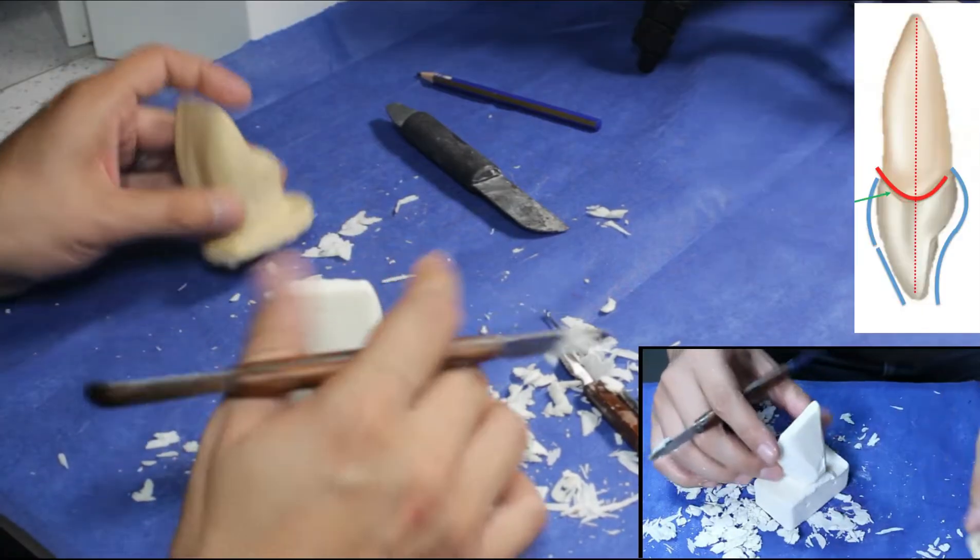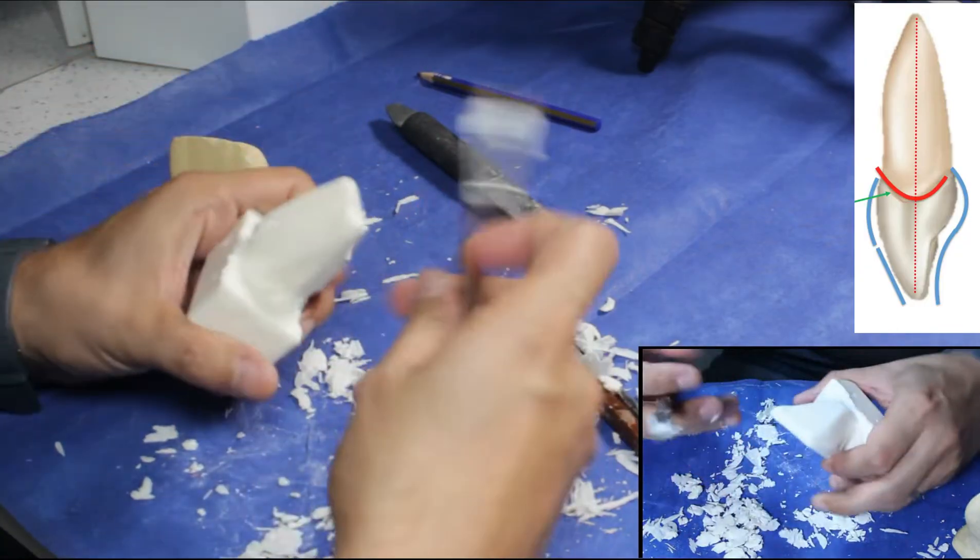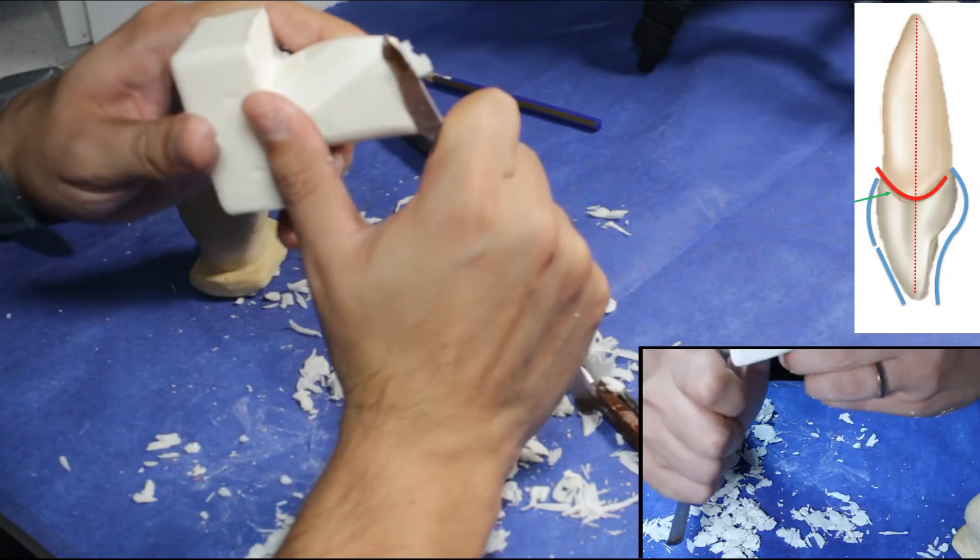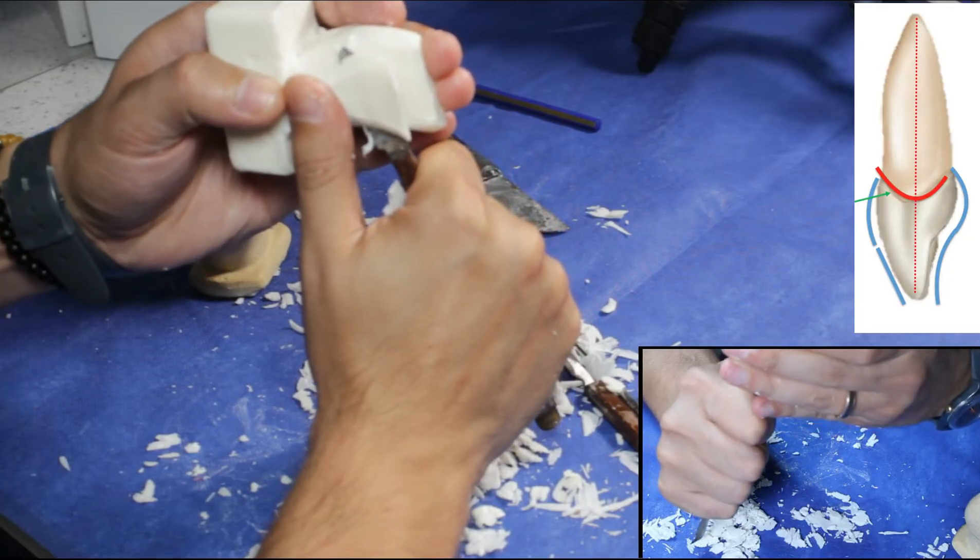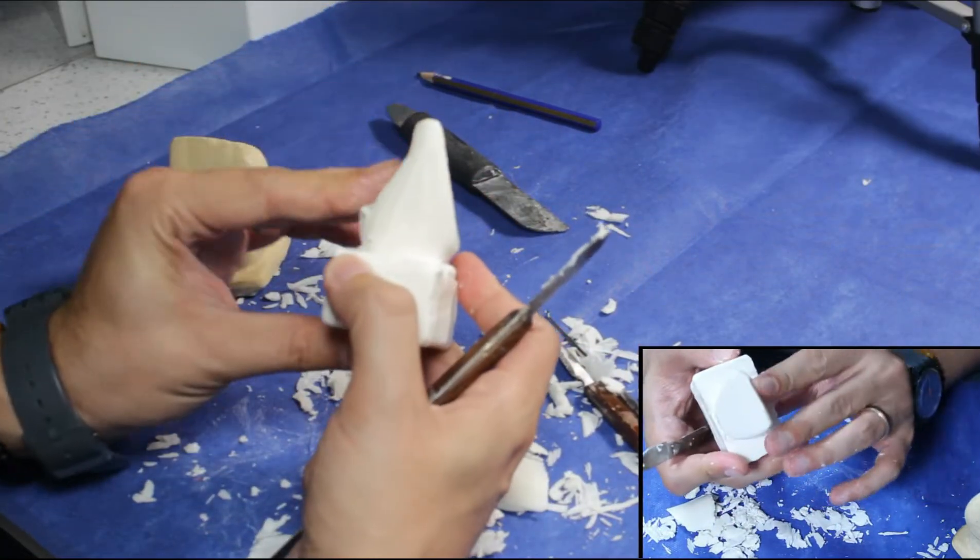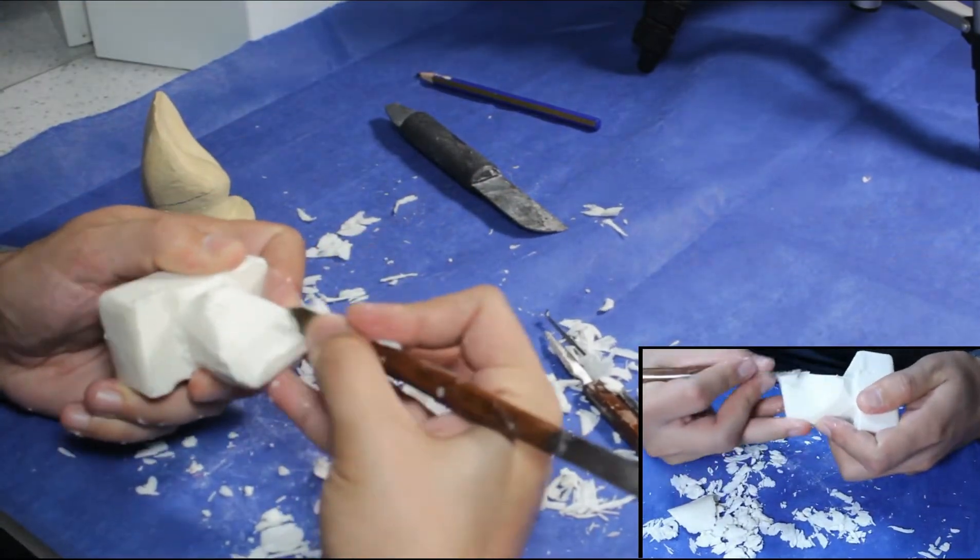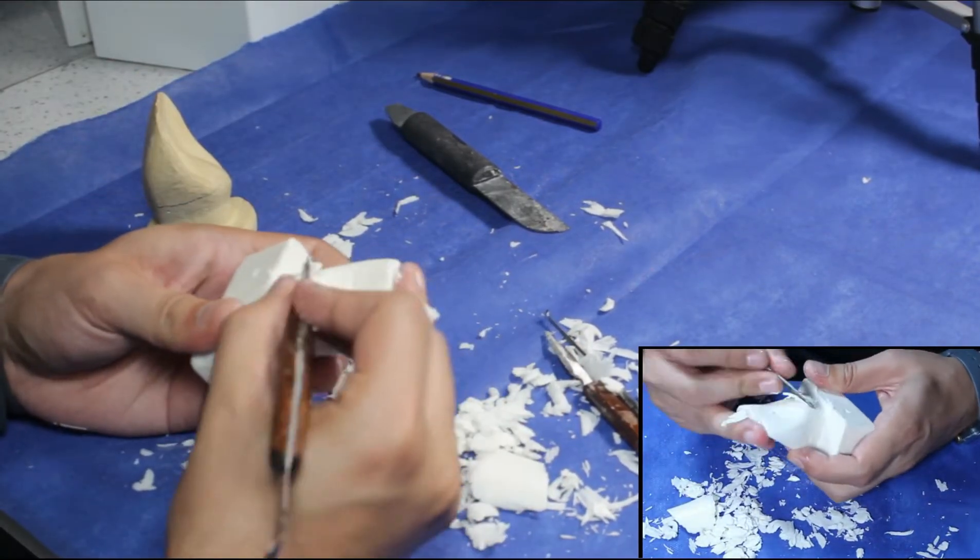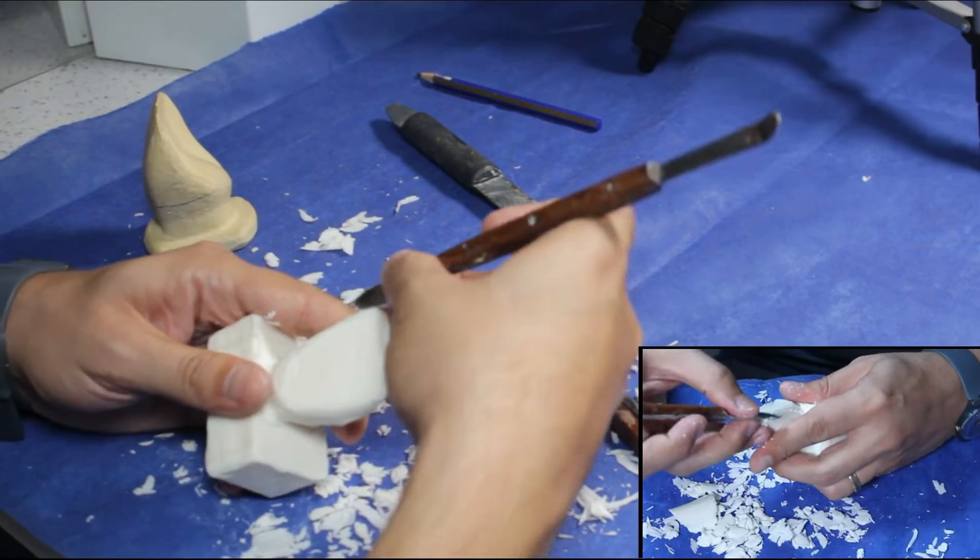Now we are going to form cingulum. Above the cingulum, there is a curve. To achieve that curve, we cut carefully with the wax knife. Don't cut too much.